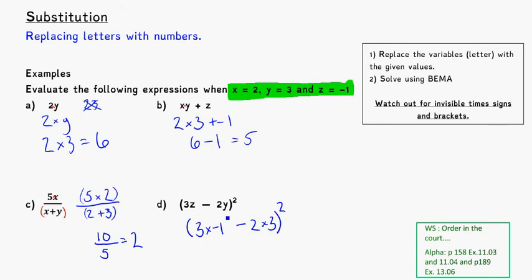So again, z is negative 1, so I'll write negative 1, 3 times negative 1, minus 2 times y is 3, so 2 times 3, and the whole thing is squared. So, using our order of operations, we've got to figure out inside the brackets first. So we'll do the timesing. 3 times negative 1 is negative 3.